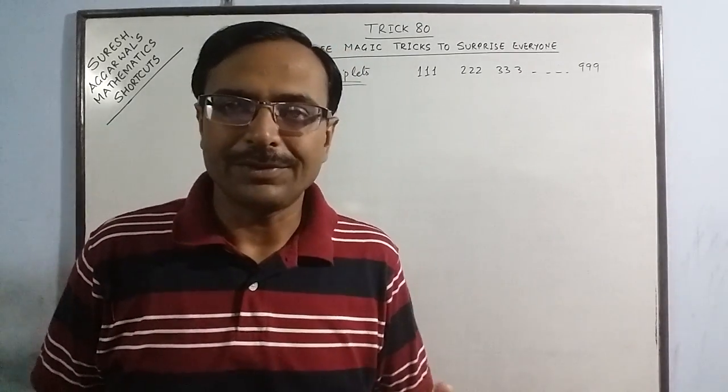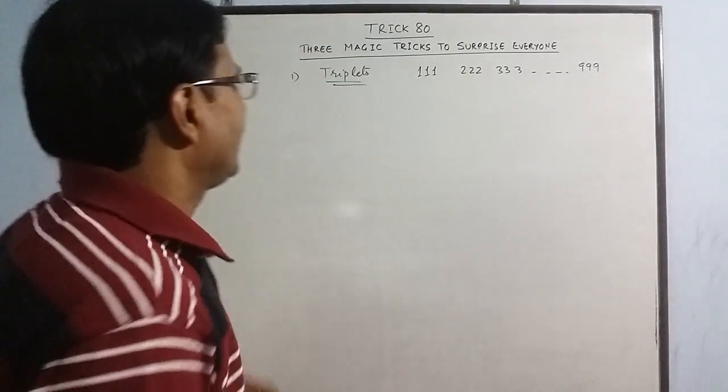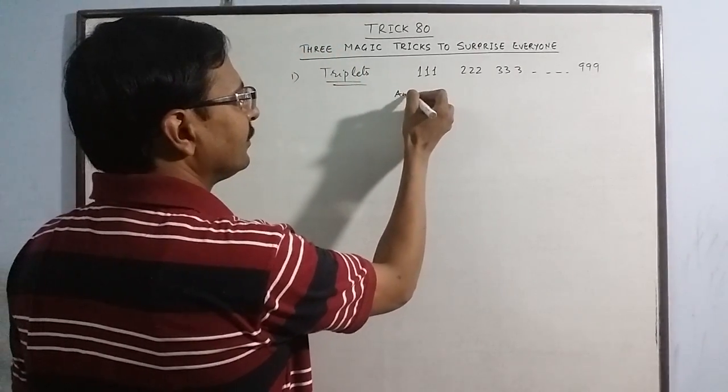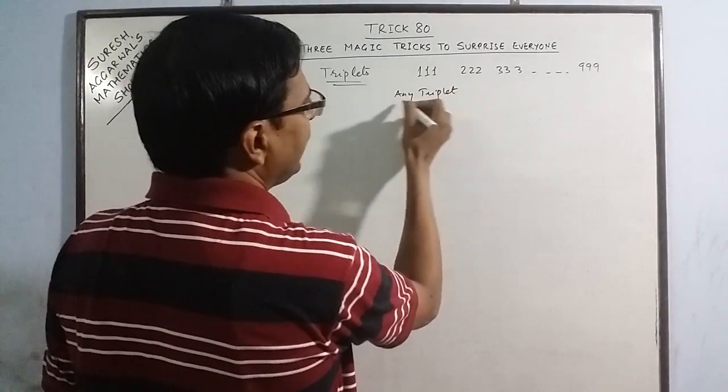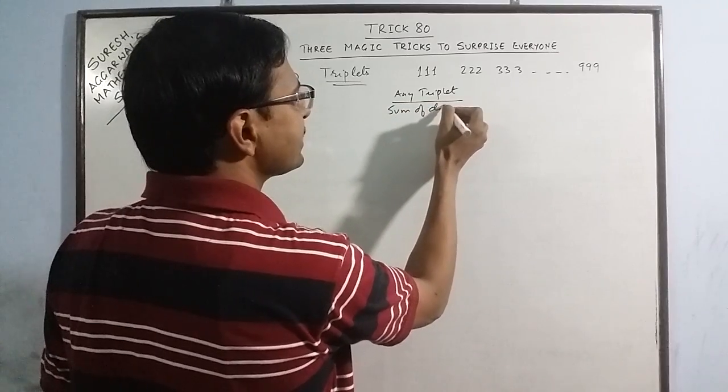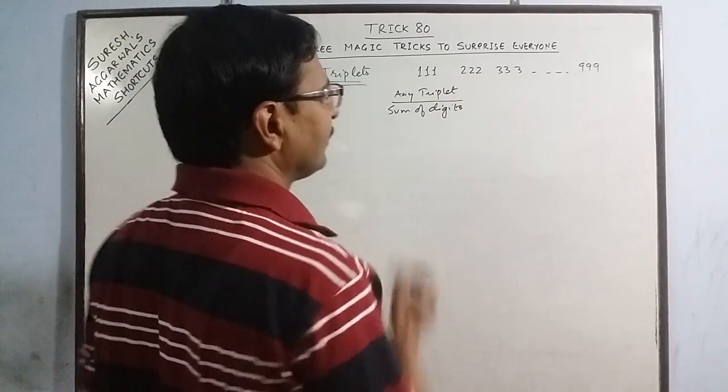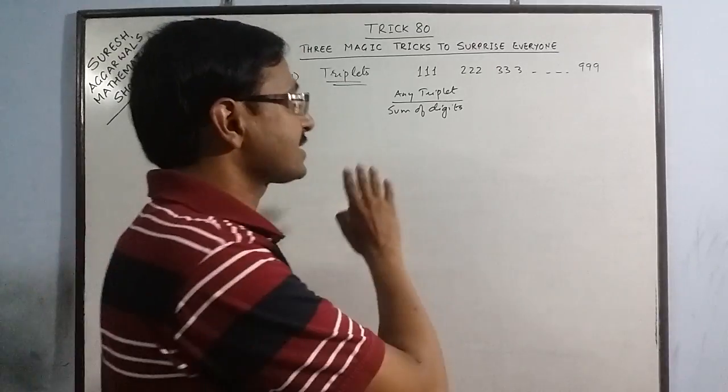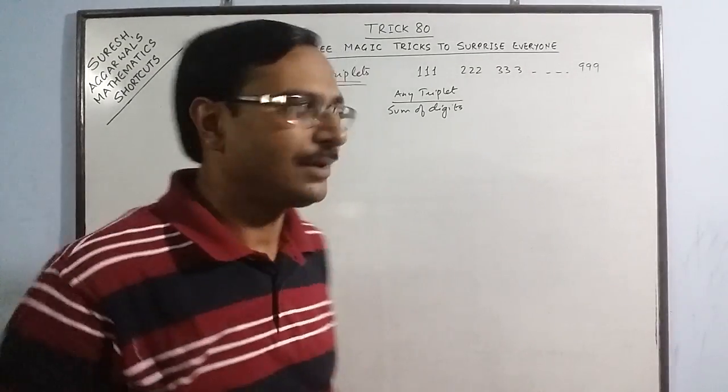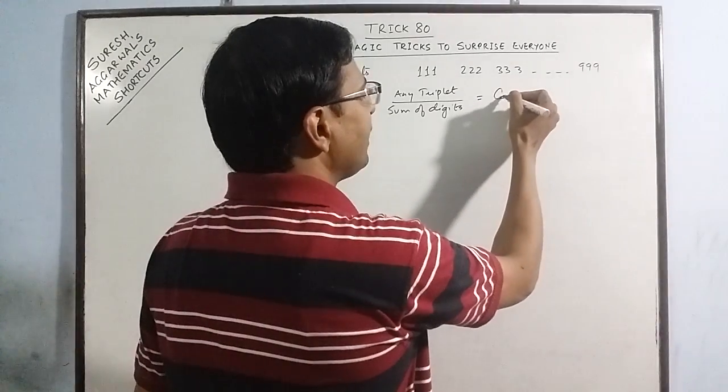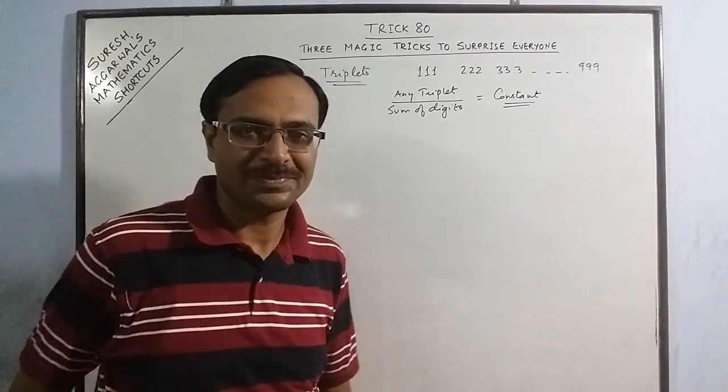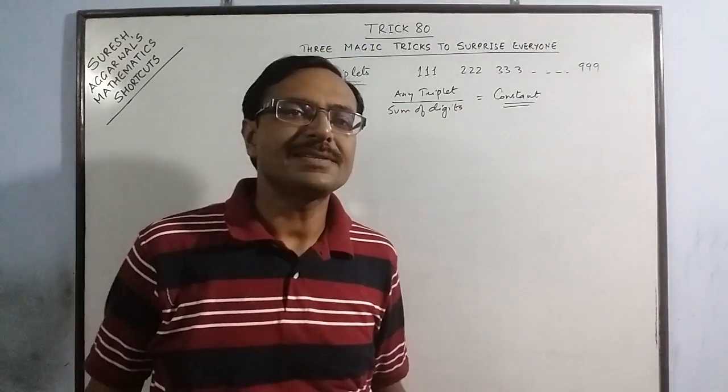Now what is the property of these numbers? See, if you divide any triplet—say you take any triplet and divide it by the sum of its digits—we always obtain the same quantity, which is constant for all triplets. Isn't it surprising? Let's check it.